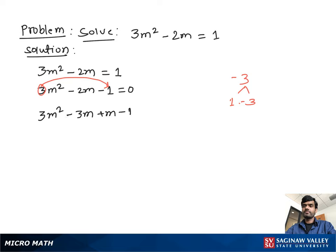So we write 3m squared minus 3m plus m minus 1 equal to 0. From this pair we take out 3m as a common factor. We have m minus 1. Now from this pair we take out positive 1 as a common factor. We have m minus 1, all equal to 0.